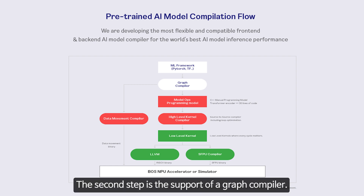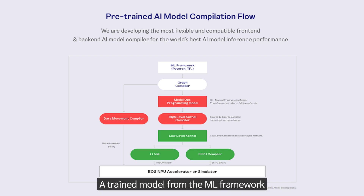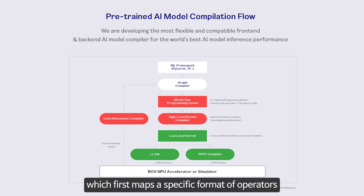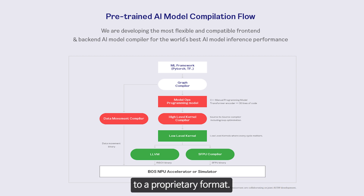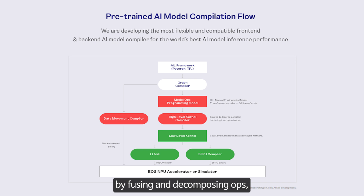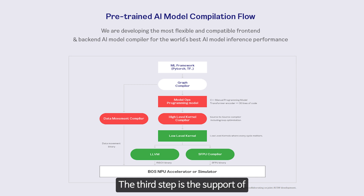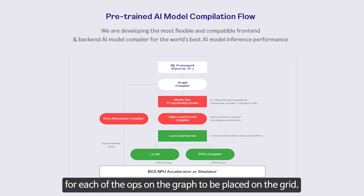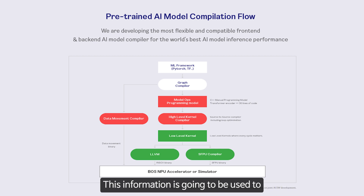The second step is the support of a graph compiler. A trained model from the machine learning framework is passed to the graph compiler, which maps specific format operators to a proprietary format. It then optimizes the computational graph by fusing and decomposing ops, preparing for further compilation stages. The third step is the support of the model operations programming model. Given the shape of a grid of computing cores, the compiler finds the best ops model for each op on the graph to be placed on the grid.